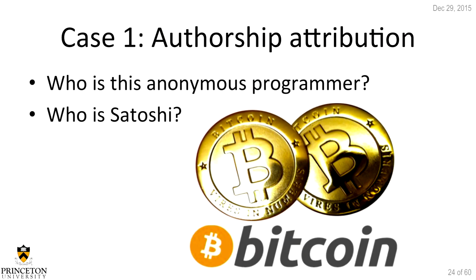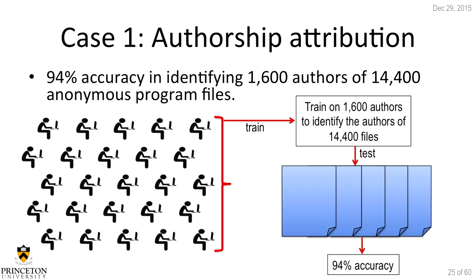We validate our method on a different data set to confirm that the features we obtained really make sense. In the general case of programmer authorship attribution — who is this anonymous programmer? — this could potentially be applied to someone like Satoshi Nakamoto, the founder of Bitcoin, whose identity is unknown. We have 1,600 programmers each with nine code samples, do nine-fold cross-validation, extract features, and once we train and test on the 14,400 samples we get 94% accuracy.